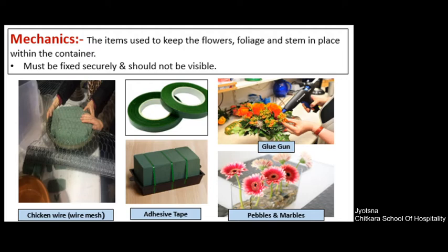You have chicken wire, which is also called as wire mesh net. This is used to secure and fix the Oasis. Adhesive tapes are available in the market and are used to secure and fix the Oasis with the container. Glue gun is used when you are making an artificial flower arrangement, to fix or paste the leaves and flowers to the stem. Pebbles and marbles can also be used to fix the stems or to place them properly within the container.